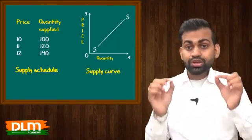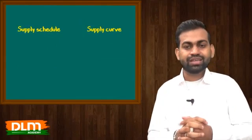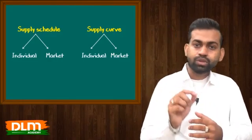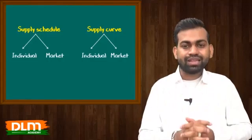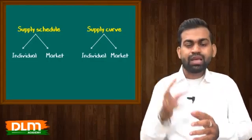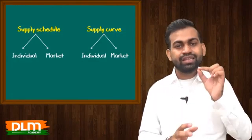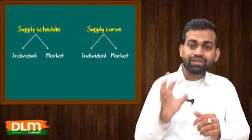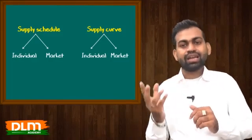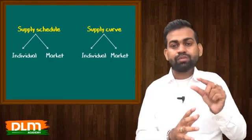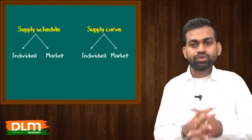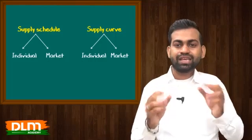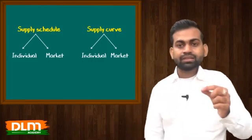Supply schedule aur supply curve dono hi do types ki ho sakti hai — individual and market. Jab hum kisi ek supplier ki baat karenge — individual supply curve. Jab saare suppliers ki baat karenge — market supply curve. Aur jab kuch suppliers ki baat karenge to supply curve neither individual nor market hogi. Hum individual word tab lagate jab ek supplier ki baat karein, aur market tab lagate jab saare suppliers ki baat karein.